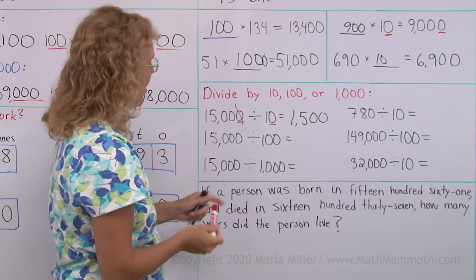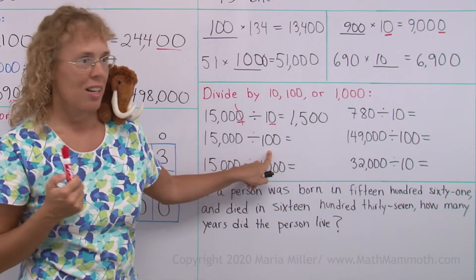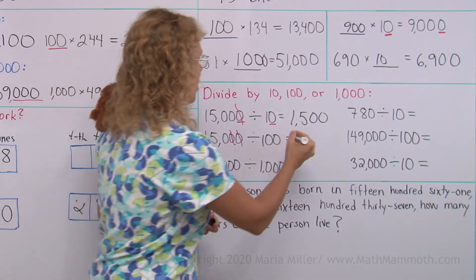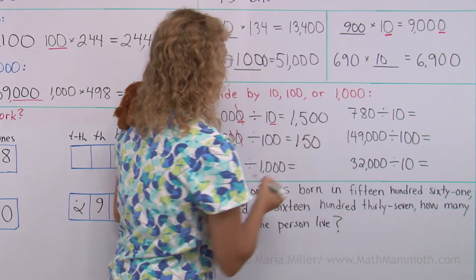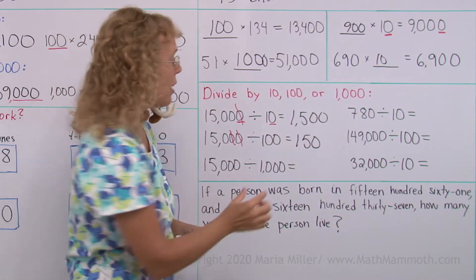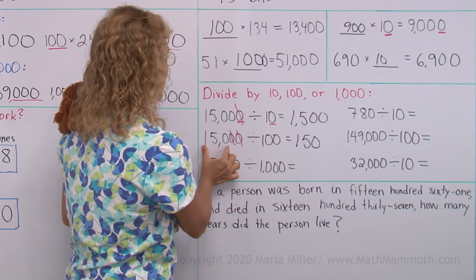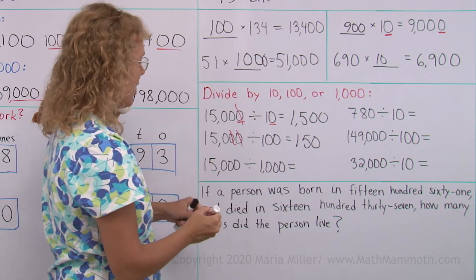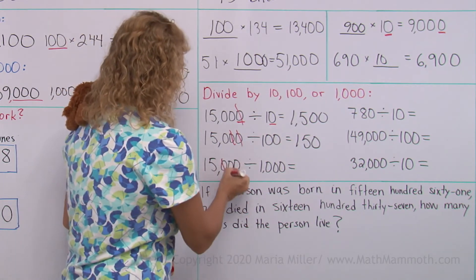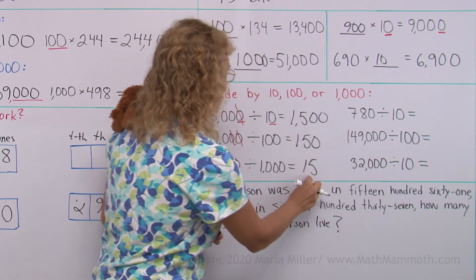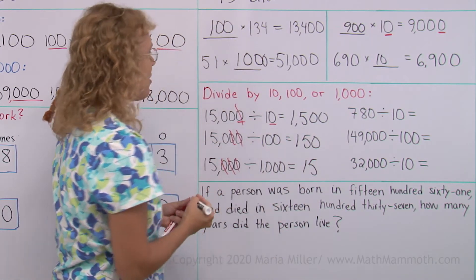And then divide it by 100. That means I'm going to take off two zeros from my number. So I get 150. Again, check by multiplying. 150 times 100, I would have 150 and two zeros. Yeah. And then, you can guess what happens here. We take off three zeros. 15. And 15 times 1,000. Yep. It's 15,000.